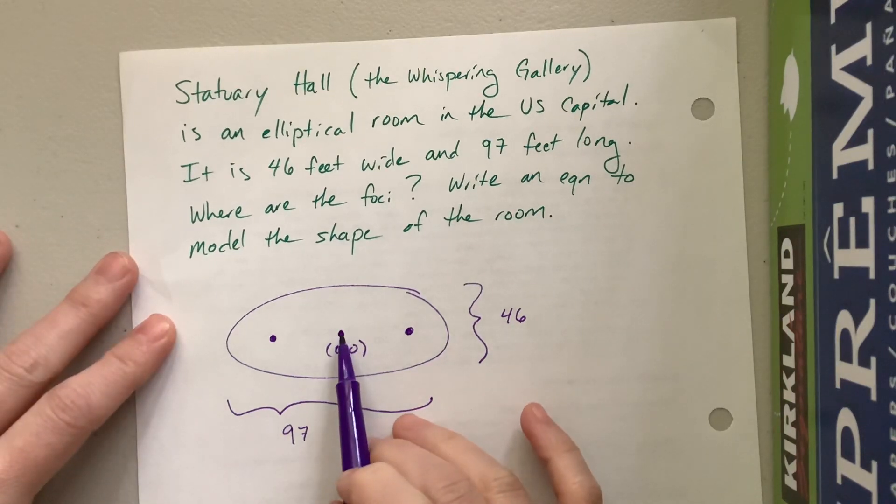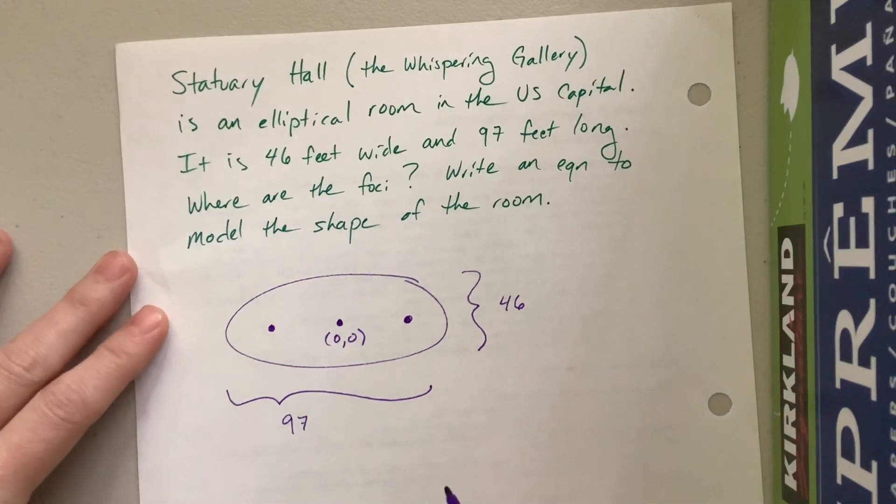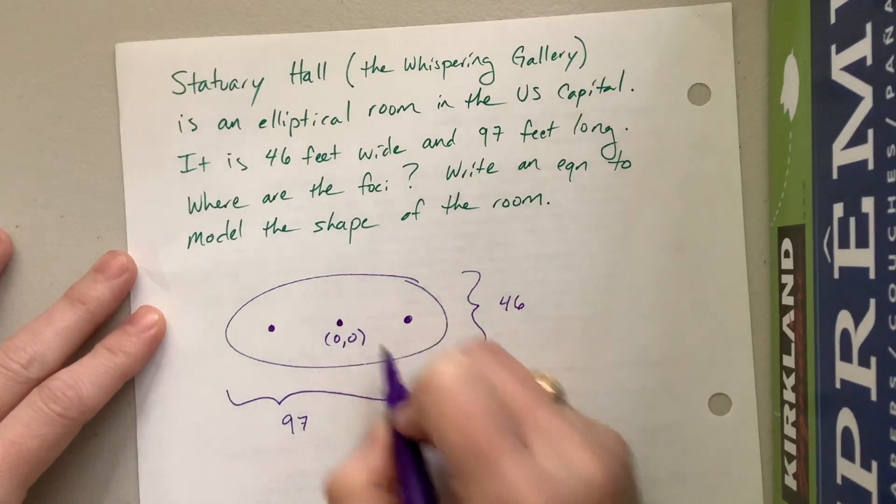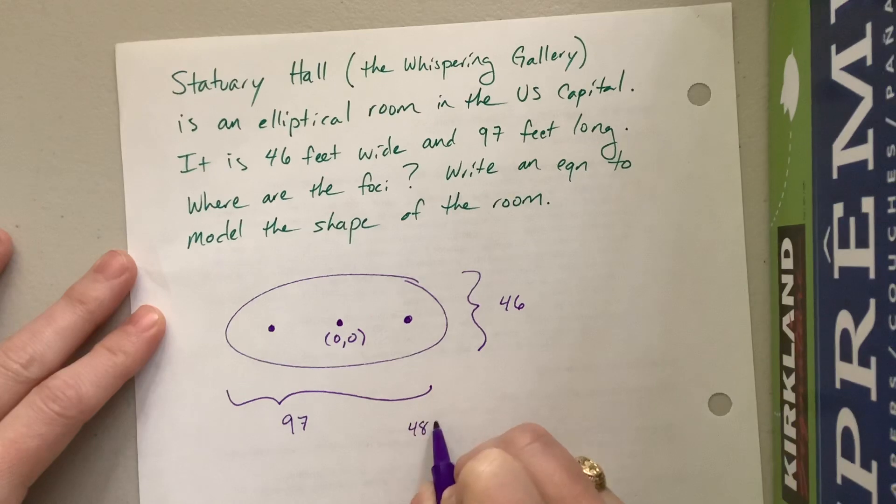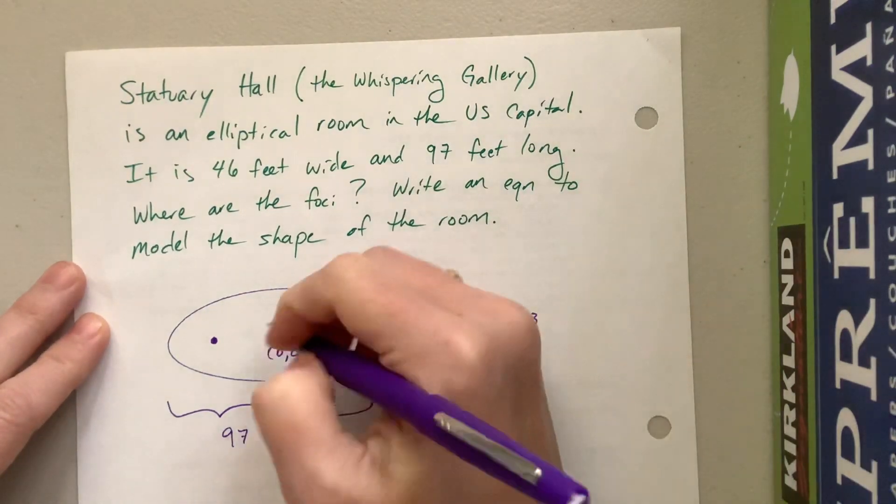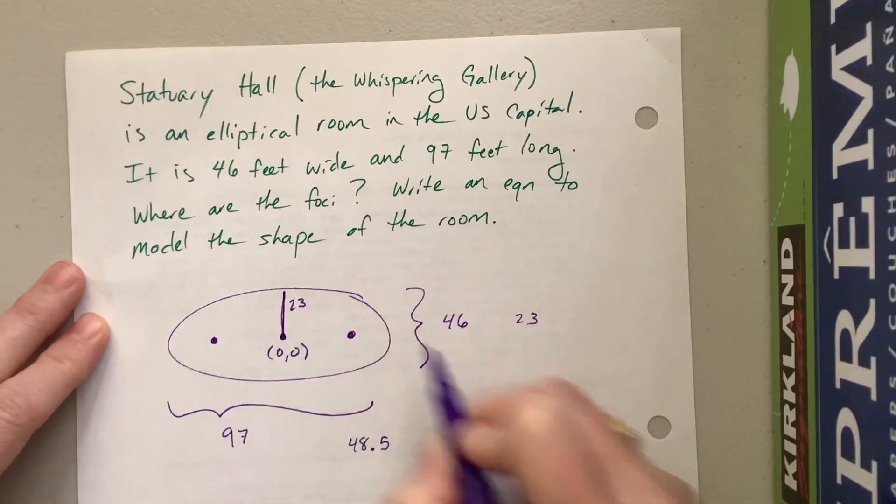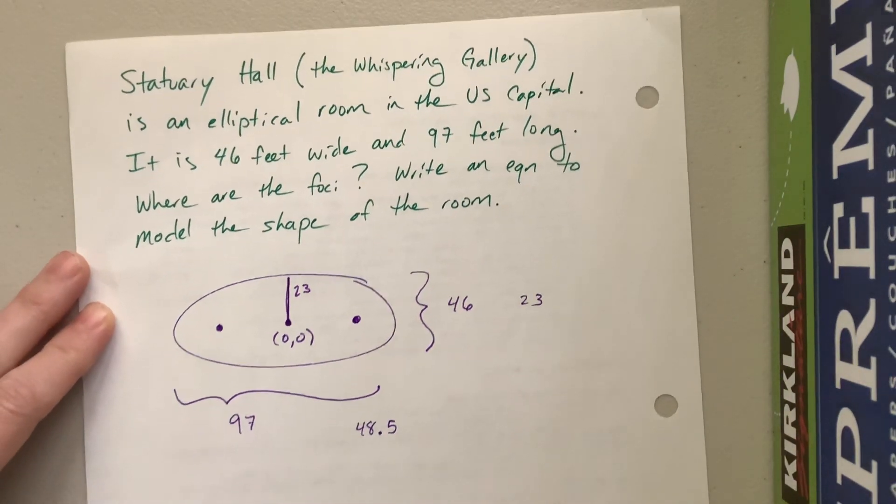So what we know here is that we have gone from zero, zero, we've gone a half of this 97, which is 48.5. So half of that is 48.5 feet, right? And then half of this is gonna be 23 feet, so from here to here is 23.